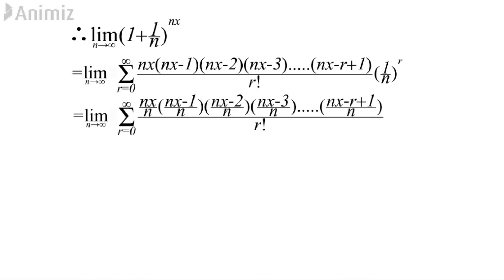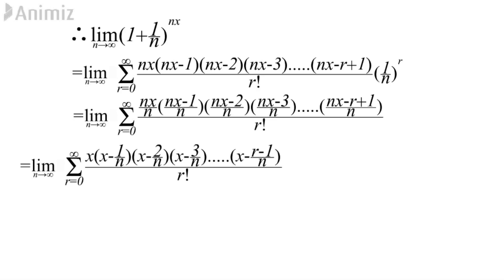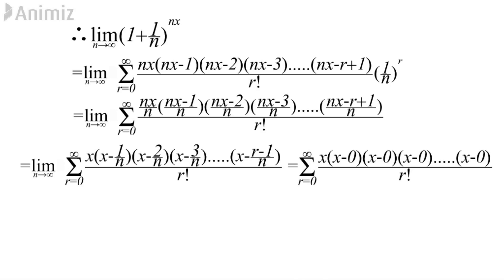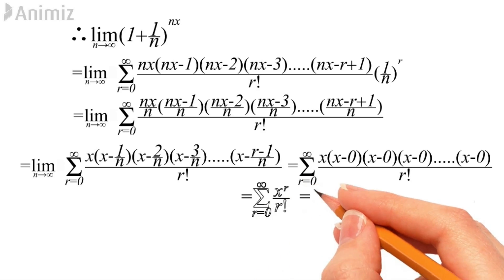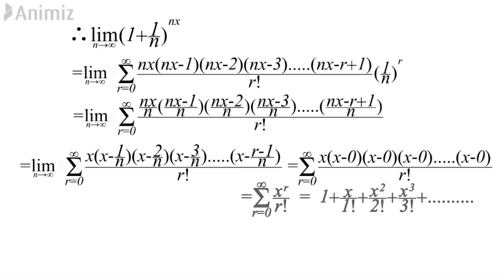We do the same operations as before: distribute 1/n into the numerator terms, then break each subtraction. Applying the limit n→∞, terms 1/n, 2/n, ..., (r-1)/n all become 0, and we do not have to worry about the upper limit since the sum is already infinite. Finally, we again get Σ x^r/r! from r=0 to ∞, which equals 1 + x/1! + x²/2! + x³/3! + ... up to infinite terms.